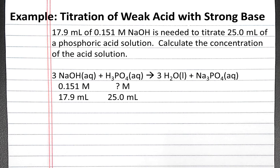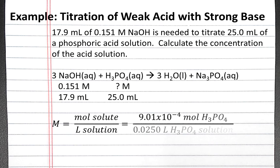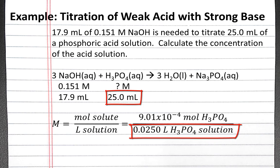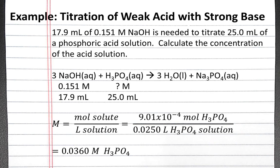Next we can use the moles of phosphoric acid and the milliliters of phosphoric acid solution to solve for molarity. The molarity is the moles of solute divided by liters of solution. So we use our moles of solute that we've just calculated, and we can convert 25 milliliters of phosphoric acid solution into liters, which is 0.0250 liters of phosphoric acid solution. If you put this in your calculator, you should get 0.0360 molar phosphoric acid.